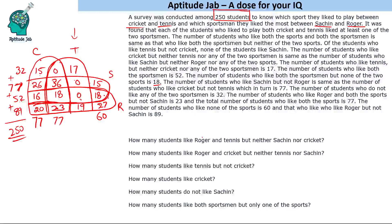Question 1: How many students like Roger and tennis but neither Sachin nor cricket? That region is outside Sachin and outside cricket, giving the answer 19. Question 2: How many students like Roger and cricket but neither tennis nor Sachin? That region gives the answer 20.